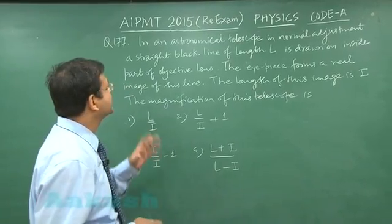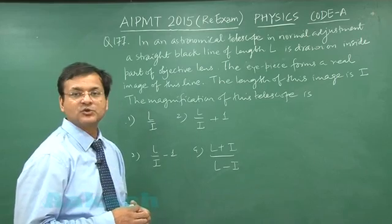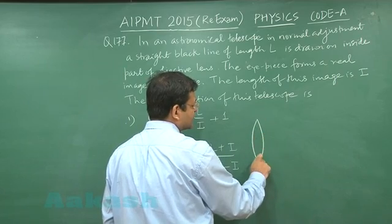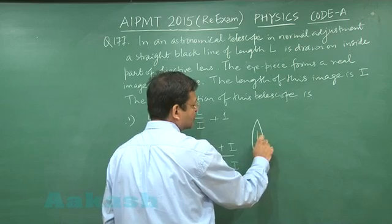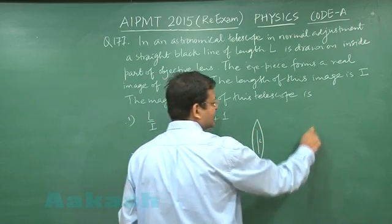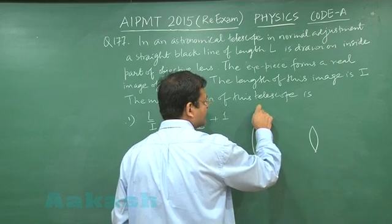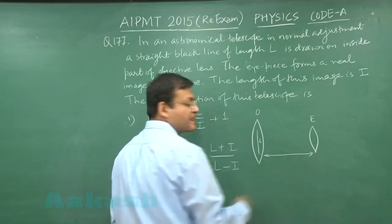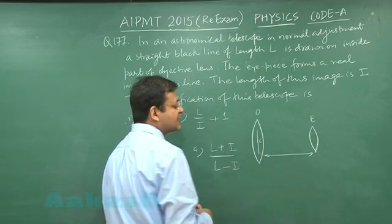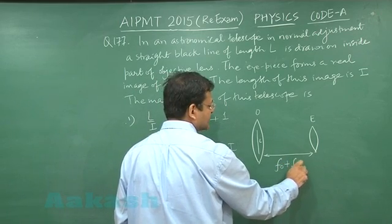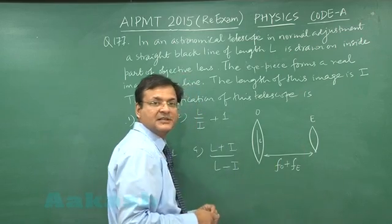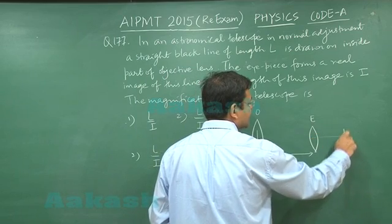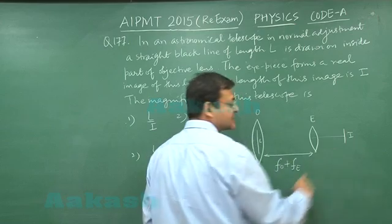Question 177 is based on an astronomical telescope in normal adjustment. They are saying that on the objective lens a line of length l is drawn, so this is working as an object and its image is being formed by the eyepiece. In normal adjustment, the distance between the two lenses is fo plus fe. So this length fo plus fe works as u, and the final image of length i is formed at distance v.